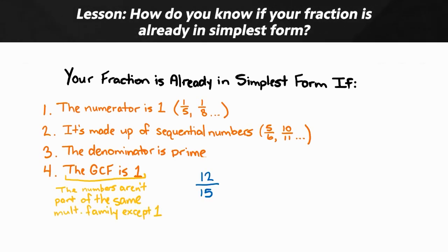For instance, with 12/15, they're both part of the times threes, so this number is not simplified.